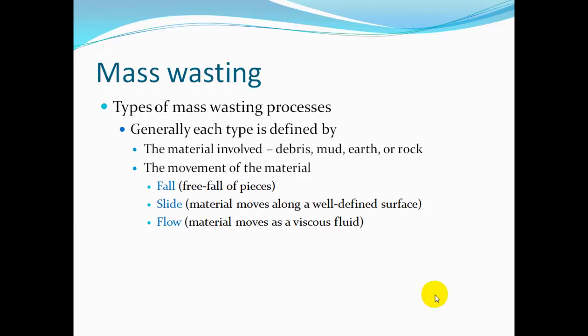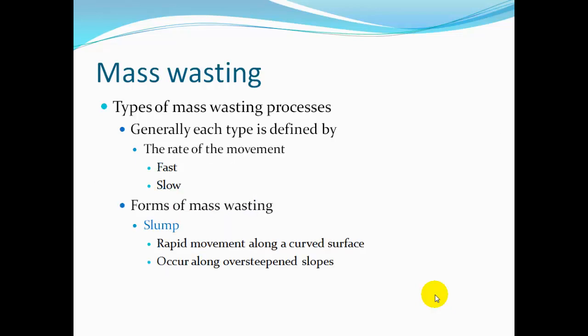Types of mass wasting processes are generally defined by the material involved — whether it's debris, mud, earth, or rock — and by the movement. Movement types include free fall of pieces, slide where material moves along a well-defined surface, or flow where materials move as a viscous fluid, kind of like ketchup pouring out of a bottle.